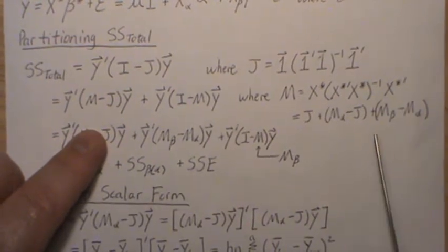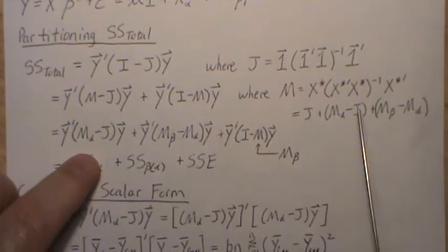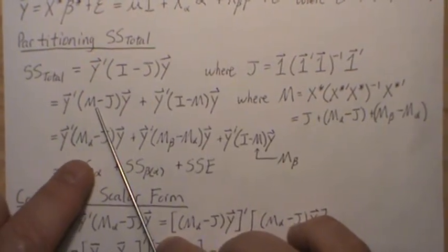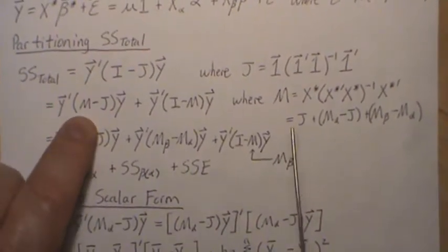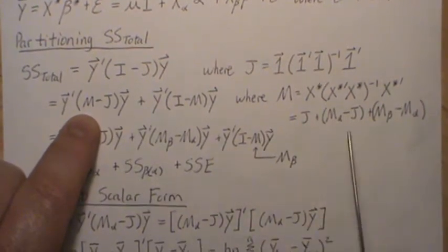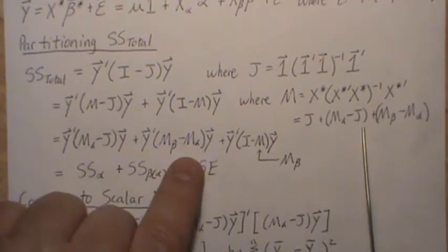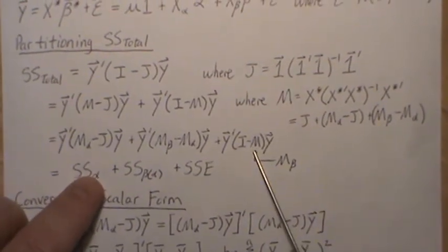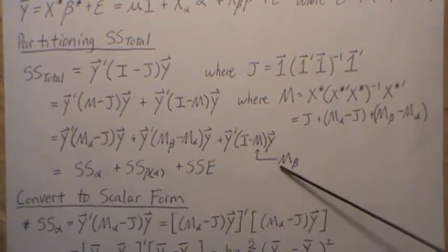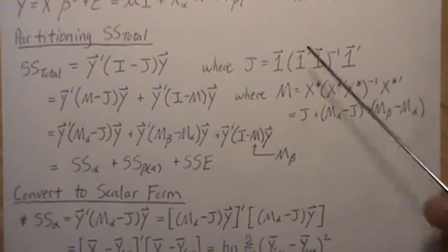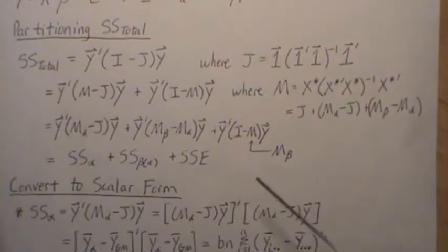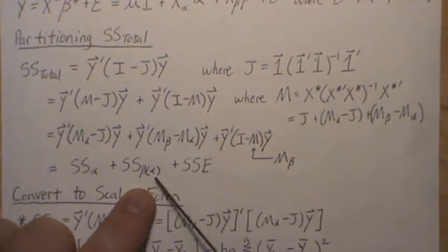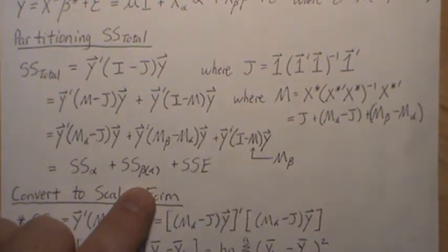Each of those are orthogonal subspaces. So if we substitute M in, the J terms cancel and what's left is two pieces; the (I minus M) term comes down as well. Now, M is the same as M_beta, the perpendicular projection matrix on the column space of x_beta. This gives us the sum of squares for factor A, the sum of squares for factor B nested within factor A, and the sum of squared error.